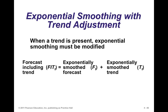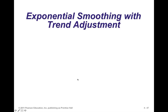We talked about exponential smoothing before. But what if there's a trend in the model? If you simply use a basic exponential smoothing model, you will lag the trend — it's not good enough. So we have to adjust the model somewhat. This model is called exponential smoothing with trend fit, or forecast including trend. It looks very similar to the exponential smoothing model but has a second component: an exponentially smoothed forecast combined with an exponentially smoothed trend to give us a forecast including trend.